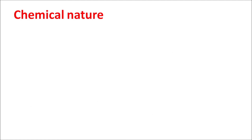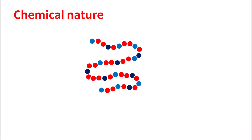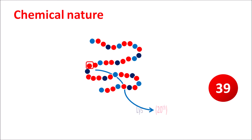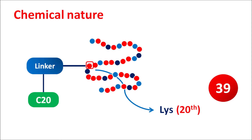Now let us look at the chemical nature of this drug. Tirzepatide is a polypeptide made up of 39 amino acids, and within this structure, modifications have been done to increase bioavailability and decrease degradation within the body. At the 20th amino acid position, lysine is introduced. This lysine is connected with a linker chain which is further attached with a C20 fatty acid. The linker is responsible for the flexibility of this polypeptide such that it is physiologically stable, and the C20 fatty acid gives long binding of this drug to the corresponding receptors, thereby producing a long duration of action.